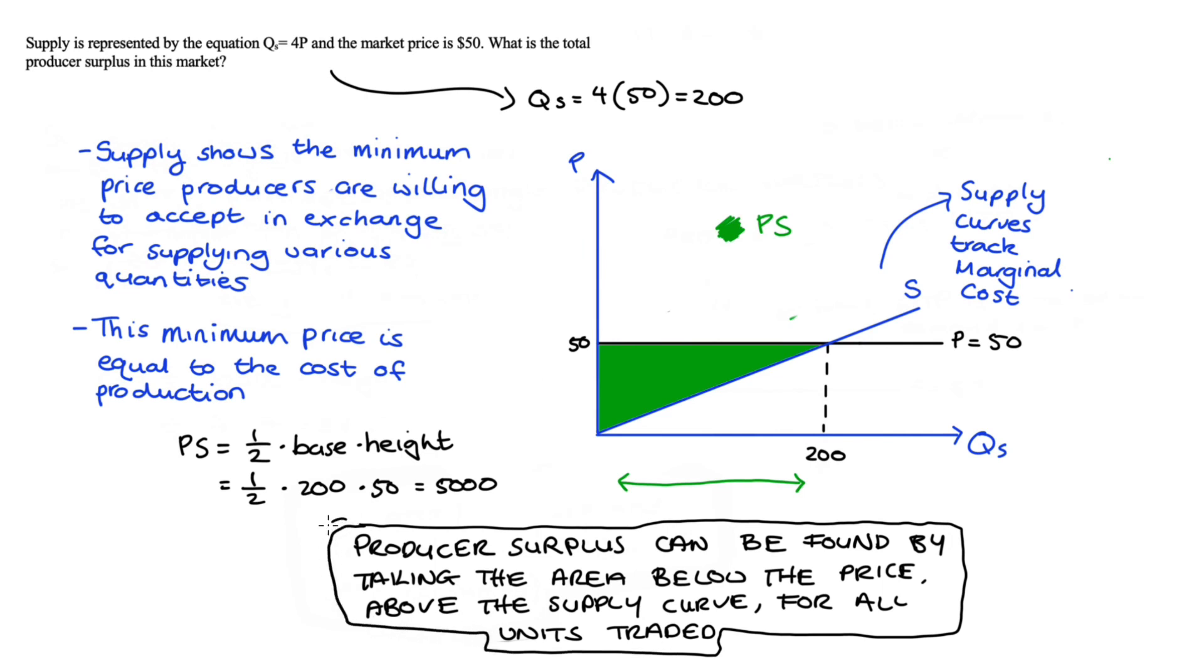For questions like this, where we have a supply function, we can just always find the area below price above supply over those units produced, and that will be producer surplus.